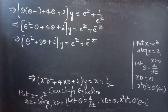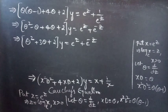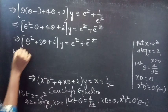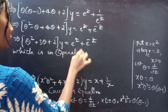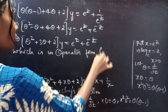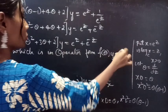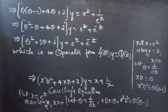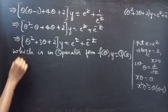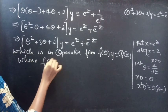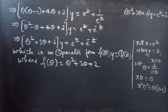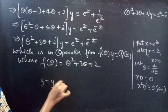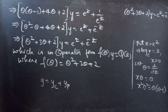We now have constant coefficients, so we have successfully reduced the given equation to one with constant coefficients. This is in operator form: f(theta) · y = Q(z), where f(theta) = theta² + 3theta + 2. The general solution is y = yc + yp, so let's find yc and yp.